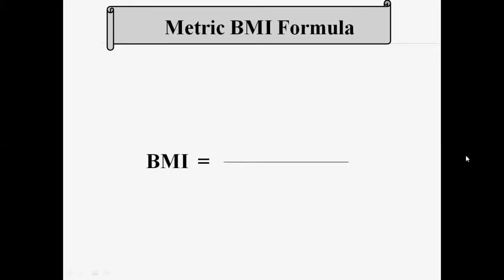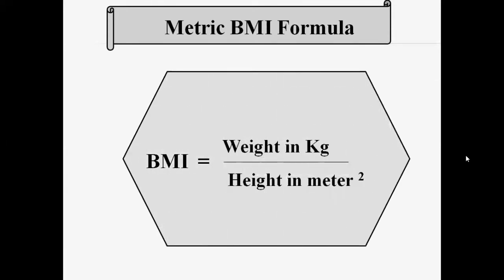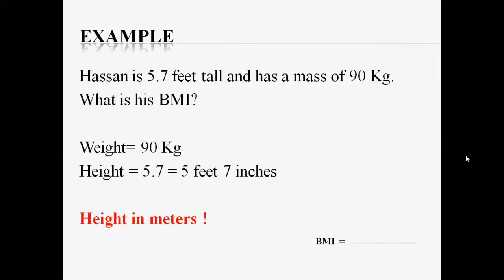The metric BMI formula is: BMI equals weight in kg divided by height in meters squared. Let's calculate the BMI with an example. The example is: Hassan is 5 feet 7 inches tall and has a mass of 90 kg. What is his BMI?